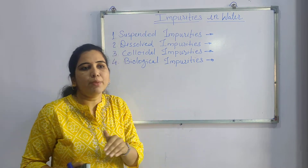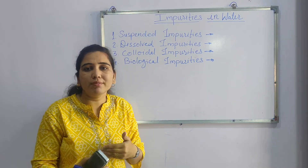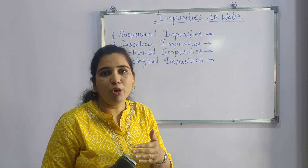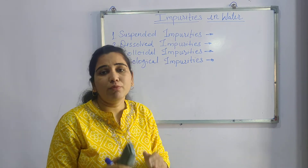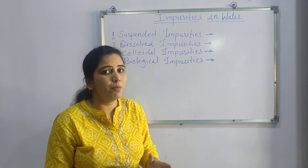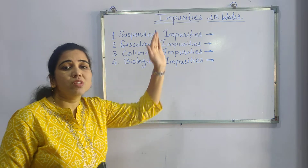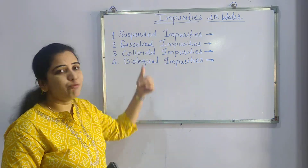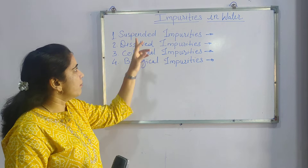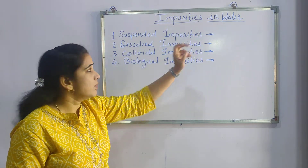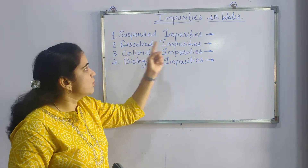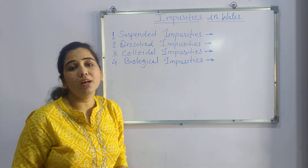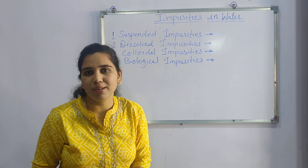For the further study of water — hardness of water and softening of water — we need to study the different impurities. There are mainly four types of impurities found: number one, suspended impurities; number two, dissolved impurities; third, colloidal impurities; and fourth, biological impurities.